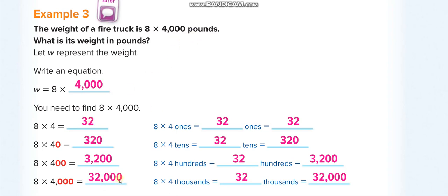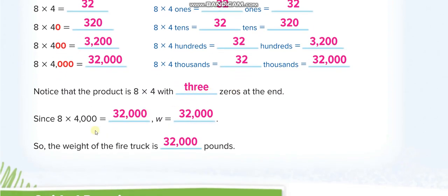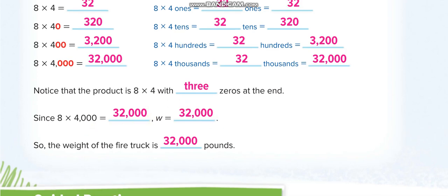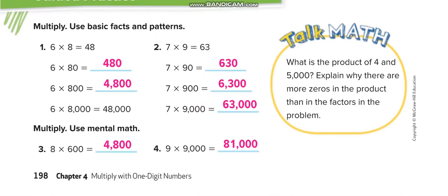For 8 times 4,000: remove three zeros, 8 times 4 is 32, put three zeros back — so 32,000. Here, we remove three zeros and put the three zeros back. Then: 6 times 8 is 48 — one zero gives 480, two zeros gives 4,800, three zeros gives 48,000. Similarly, 7 times 9 is 63 — same pattern with one, two, three zeros. For 8 times 600: remove two zeros, 8 times 6 is 48, put two zeros back. And 9 times 9 is 81 with three zeros.